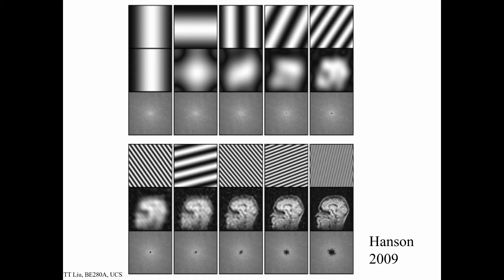Here we take components of different spatial frequencies and add them up. We start with a very low spatial frequency in x, a very low spatial frequency in y, then add a higher spatial frequency in x, then diagonal components. The second row shows the cumulative summation. As we keep adding components, we add more and more detail. Adding very high spatial frequency components starts to fill in fine detail in the image, until finally, with enough components, we end up with a complete image.